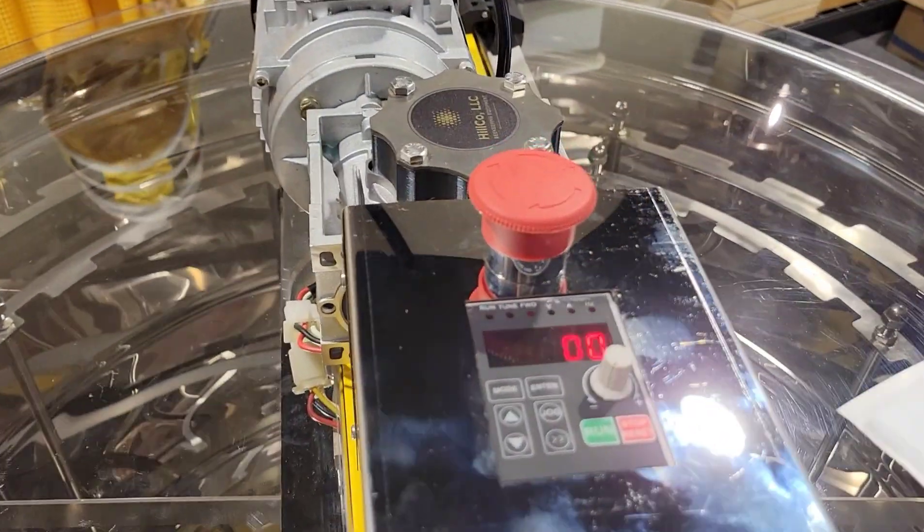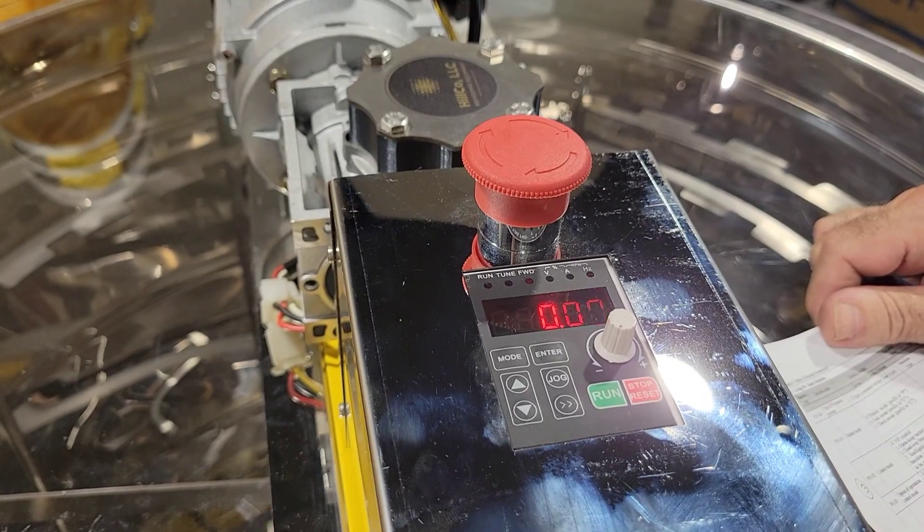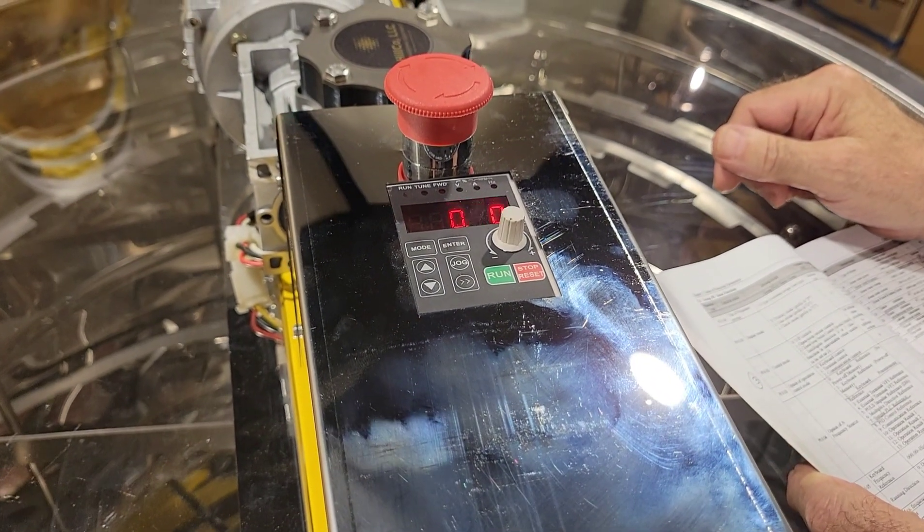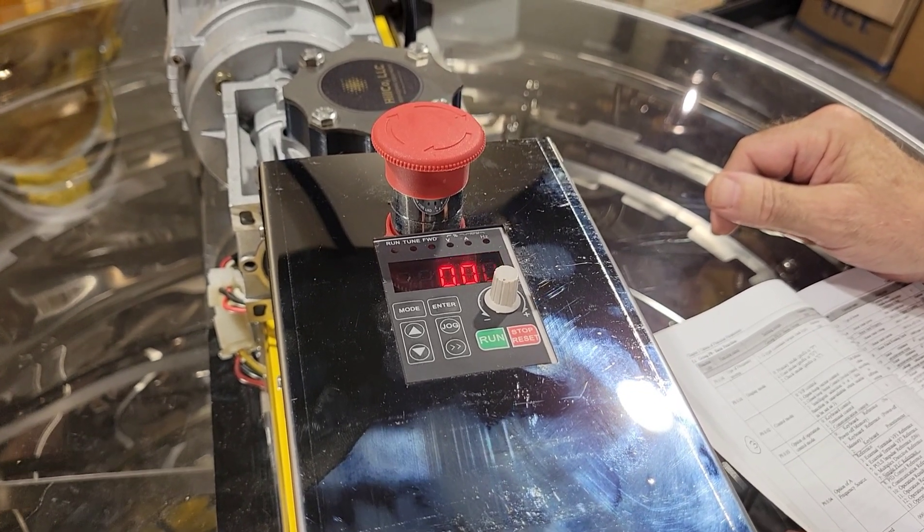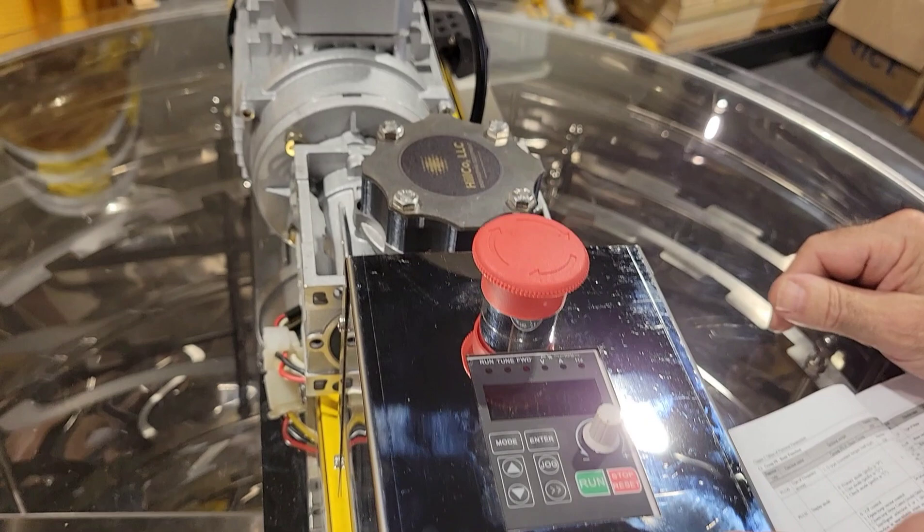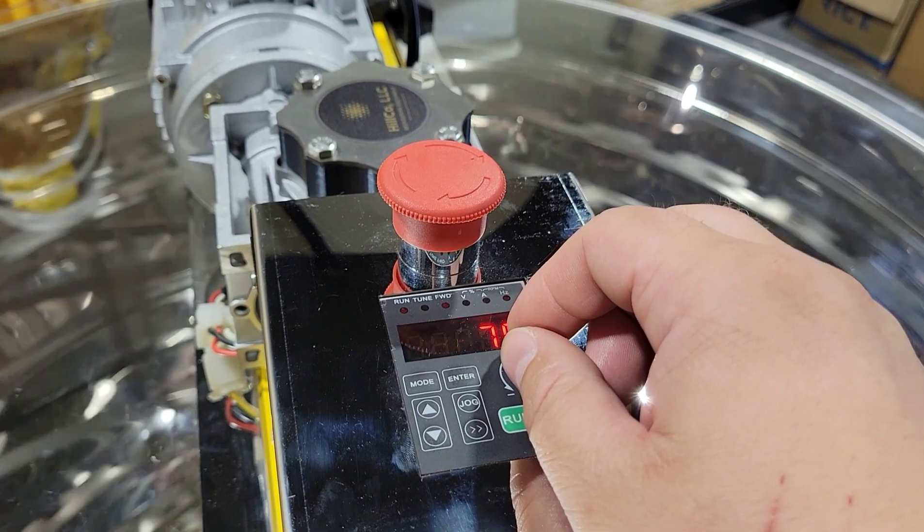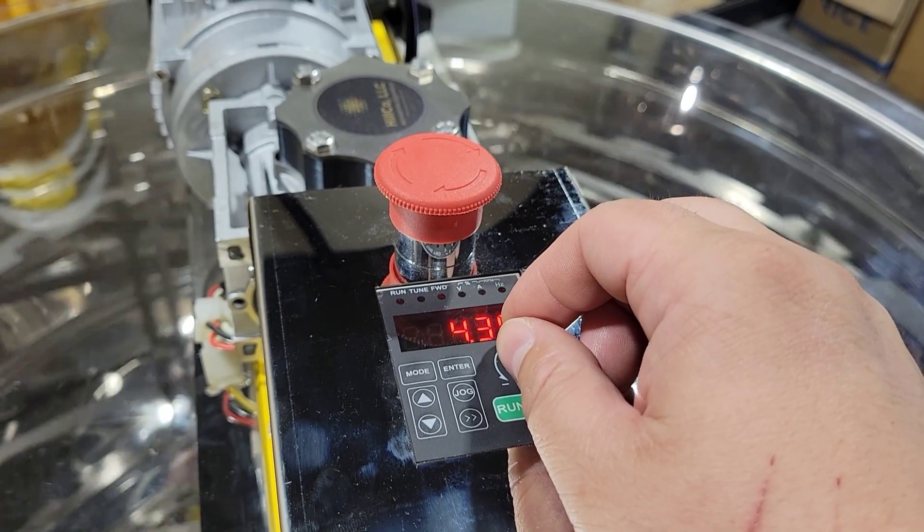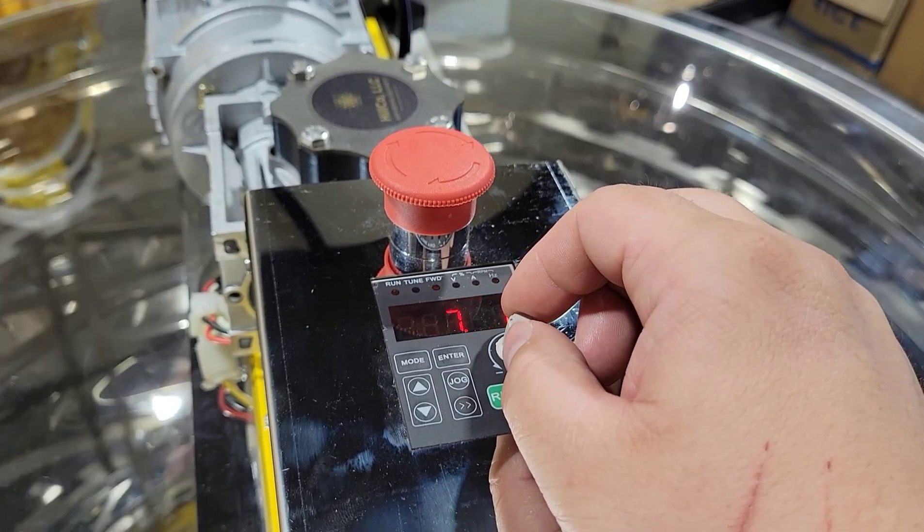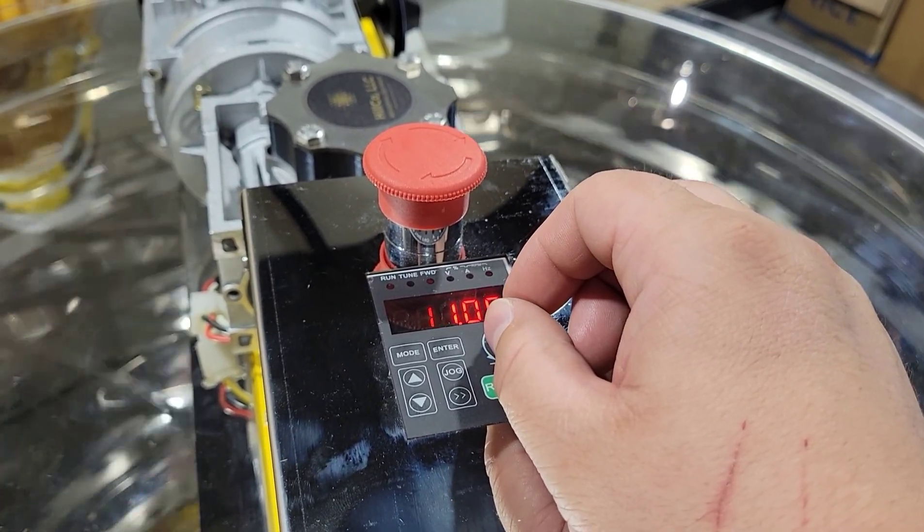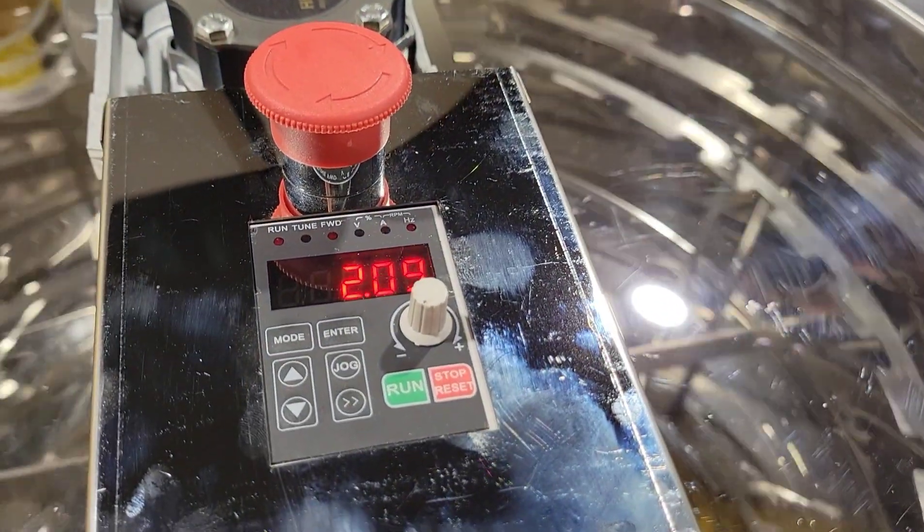We have our Mega Max 32-frame honey extractor sitting here. This is the same controller we use in the Super Max model, the 24-frame model. By default, these machines are set where you just hit run and control with the speed control knob. I started off a little quick there, but you can just control and run up and down the speed control knob.